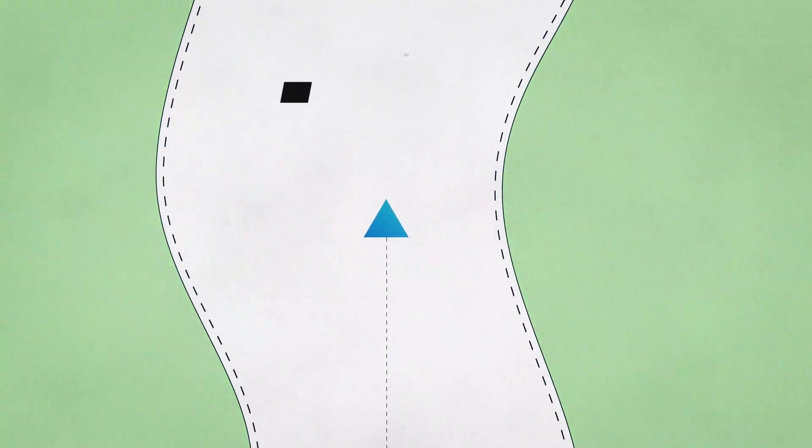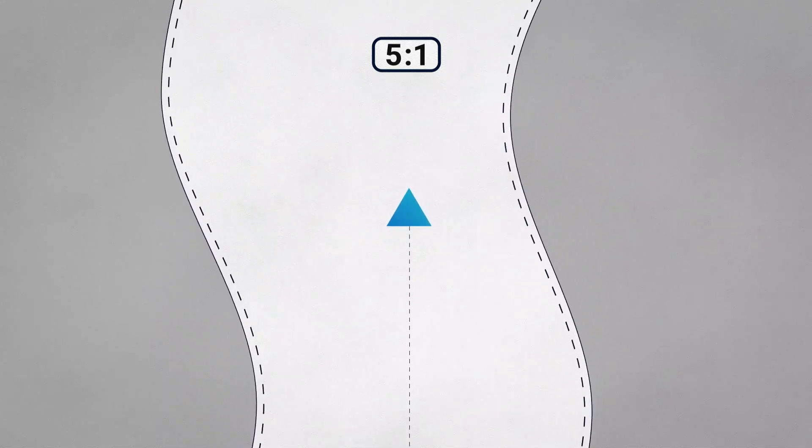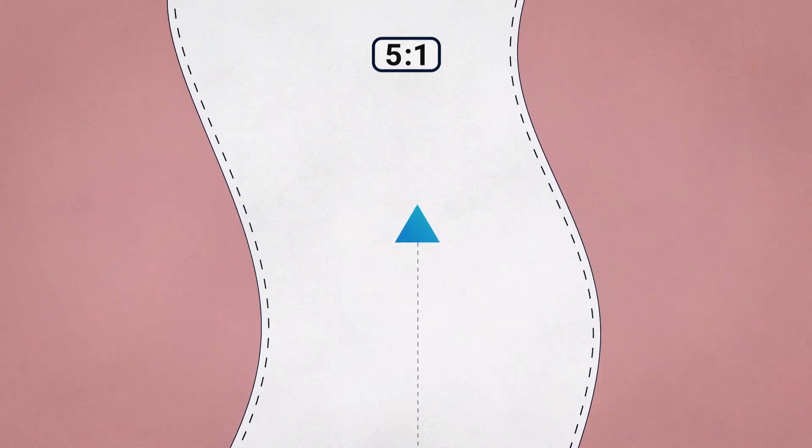Synthetic asset protocols typically have the same notion of a band of healthy operation. This could be a range of collateralization ratios or a range of prices within which a system is healthy. But what happens outside this band?